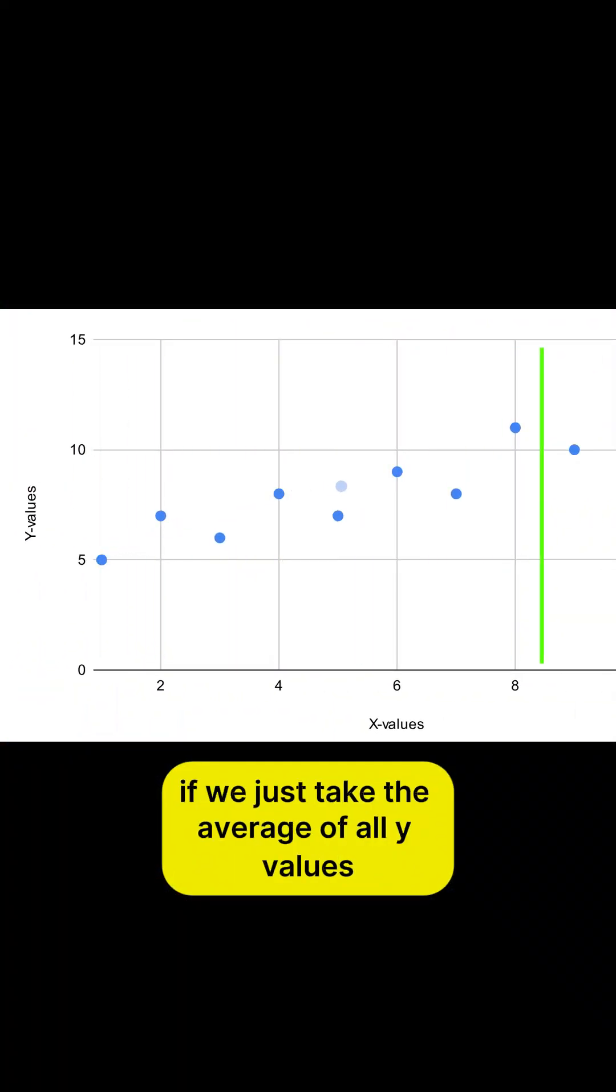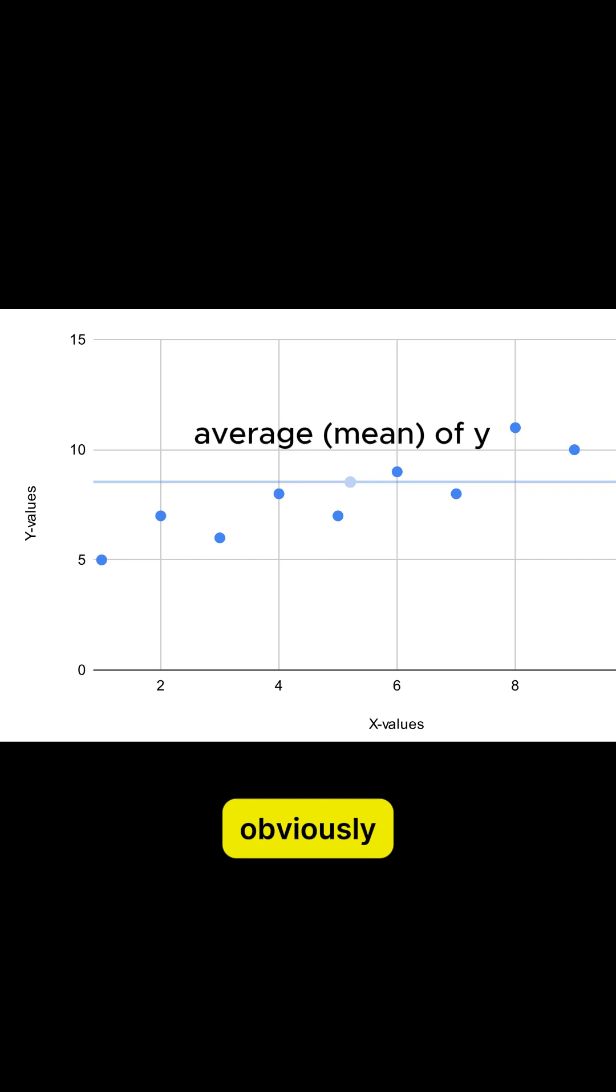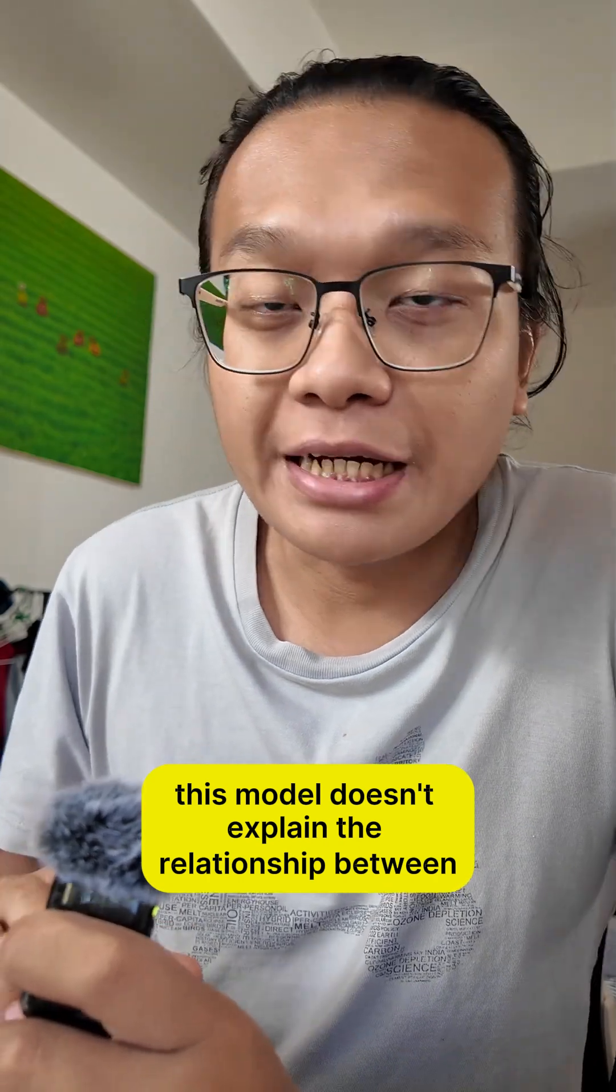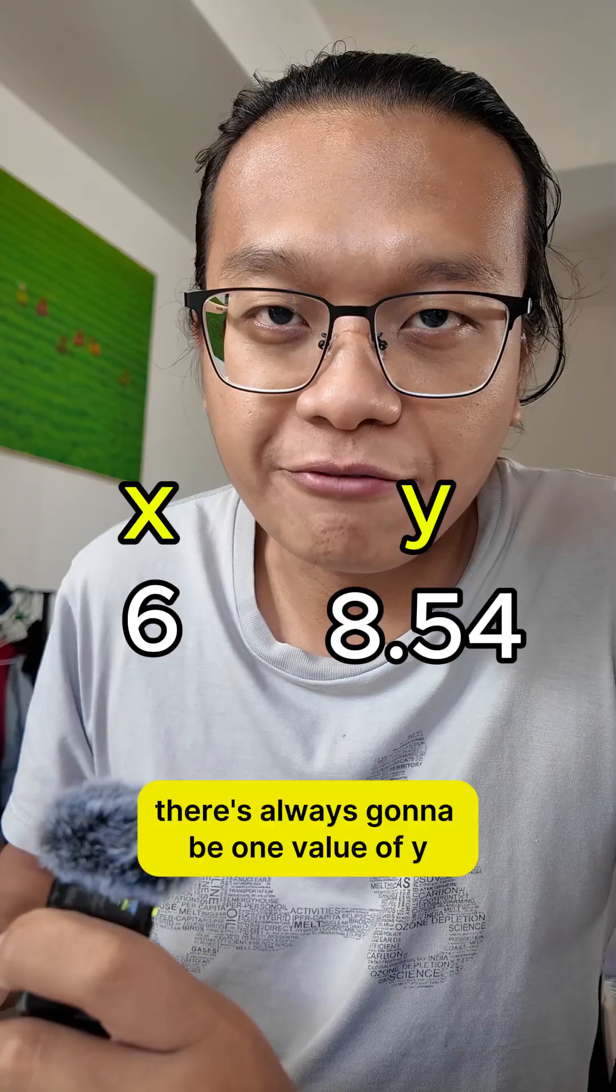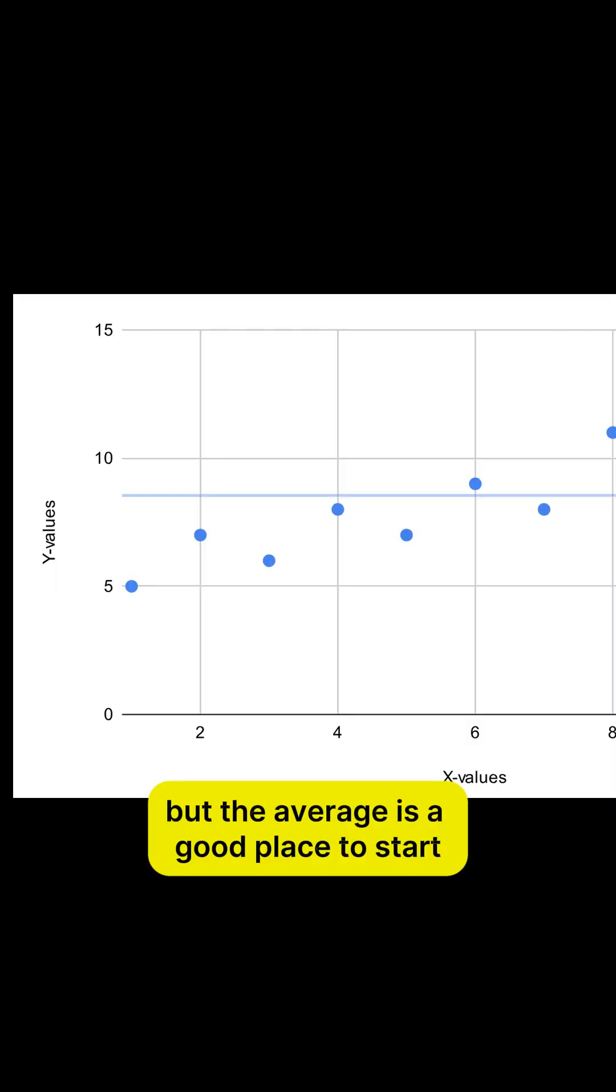If we just take the average of all Y values, we get this straight horizontal line. Obviously, this model doesn't explain the relationship between X and Y, because for every X, there's always going to be one value of Y. But the average is a good place to start.